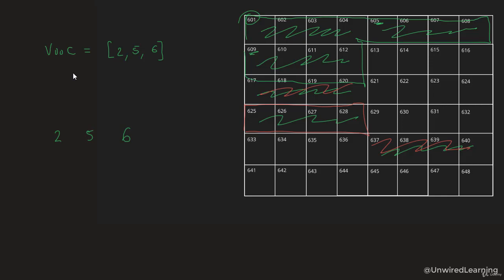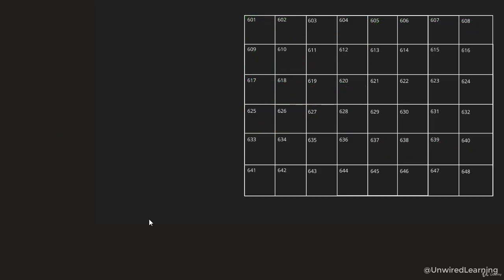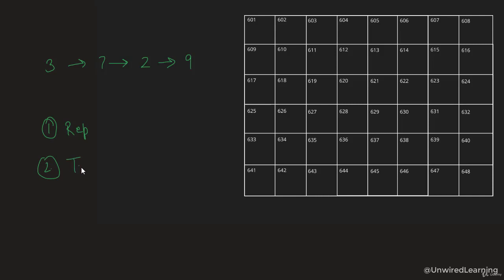Now let's take an example to understand linked lists better. Take values 3, 7, 2, and 9. This is a minimal representation of how we represent a linked list. There are two important things to understand: how we represent a linked list, and what type of linked list we are working with. Linked lists are represented with the help of nodes.